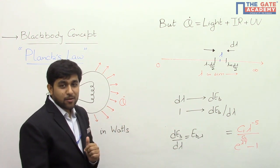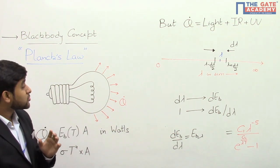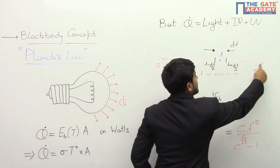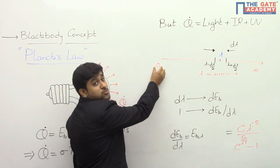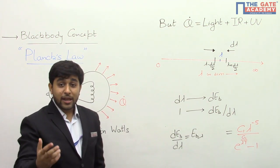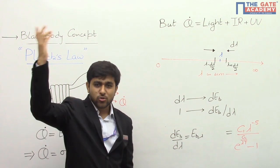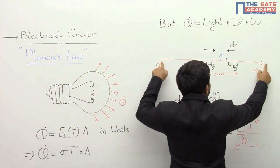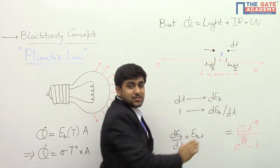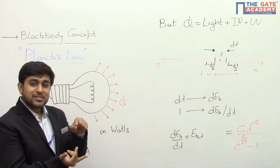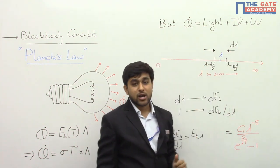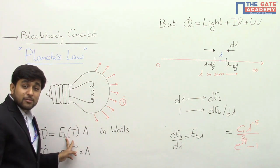Let us consider a black body which is at a temperature T Kelvin. Because of that temperature it is going to emit radiation over a wide range of wavelengths, and that wavelength range is shown here. This red line denotes the wavelength range — zero corresponds to very small wavelengths like 10 raised to power minus 10 micrometers (cosmic rays), and infinity corresponds to very large wavelengths like 10 raised to power 10 micrometers (radio waves). On this wavelength band I have marked wavelength value lambda, and around this lambda I have taken a very small wavelength range known as d-lambda.